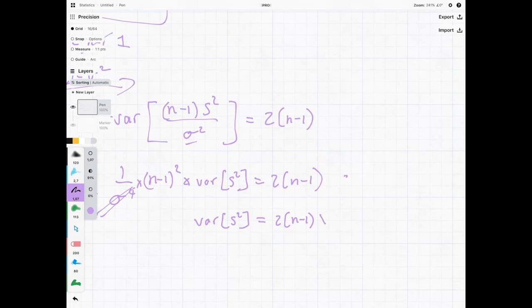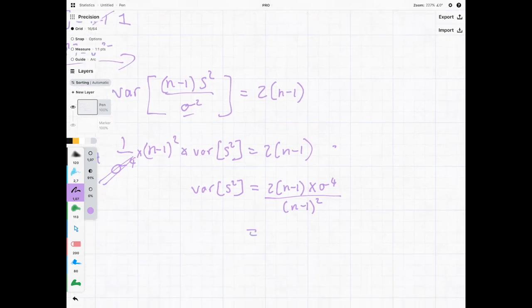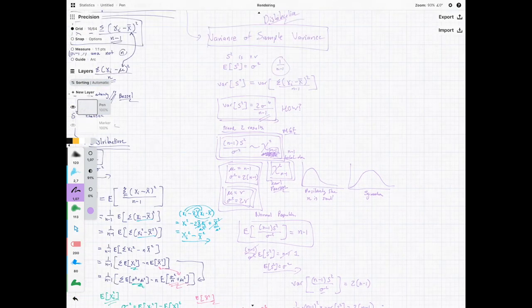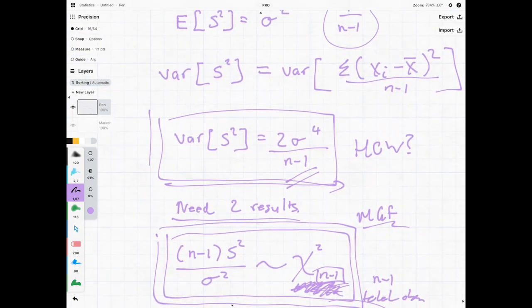The variance of sigma squared if we make it the subject of our formula it's going to be equal to n minus one times sigma to the power of four divided by n minus one squared which we then cancel out those terms and we have two times sigma to the fourth divided by n minus one, bam which is done.